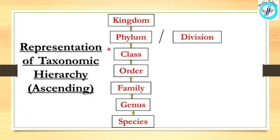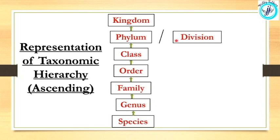We can see the representation of taxonomic hierarchy here in ascending order. There is a species related to genus, genus is related to family, then order, class, and phylum or division. We use the word phylum for animals and division for plants. The highest level is kingdom. This is the taxonomic hierarchy representation.